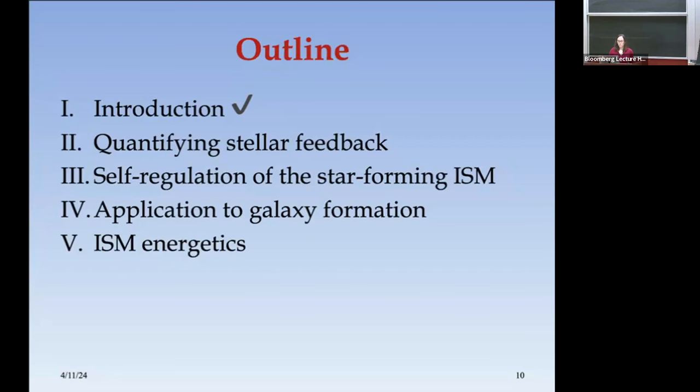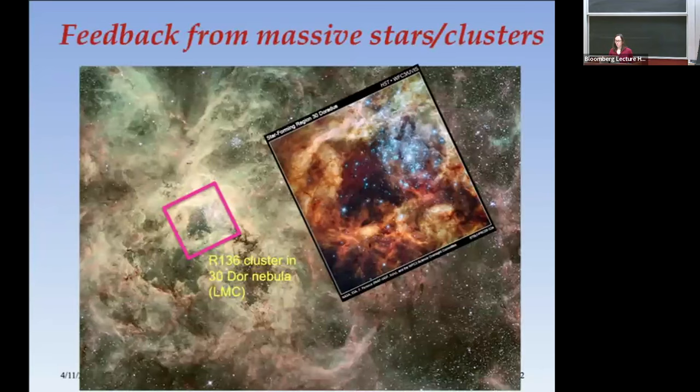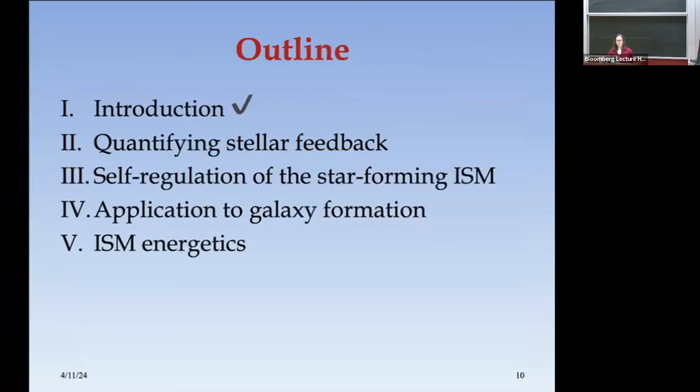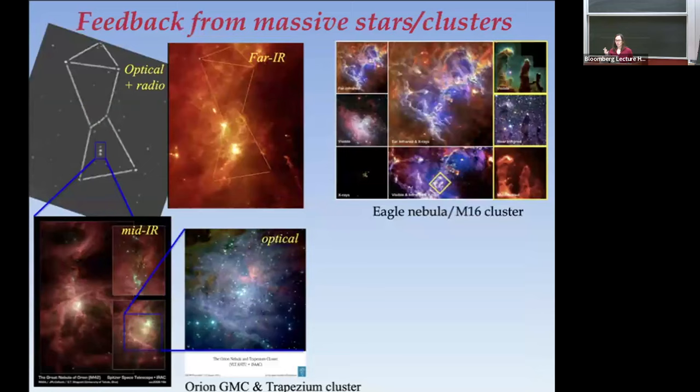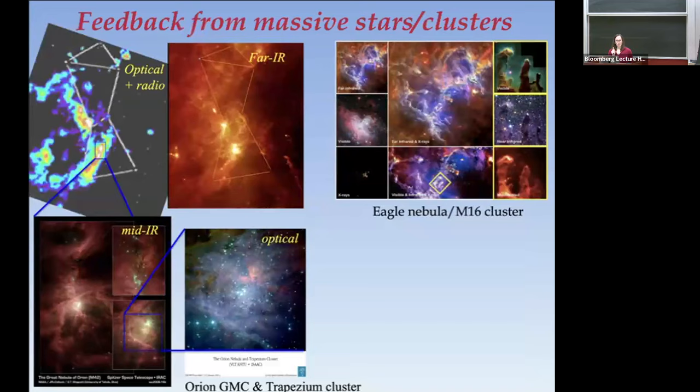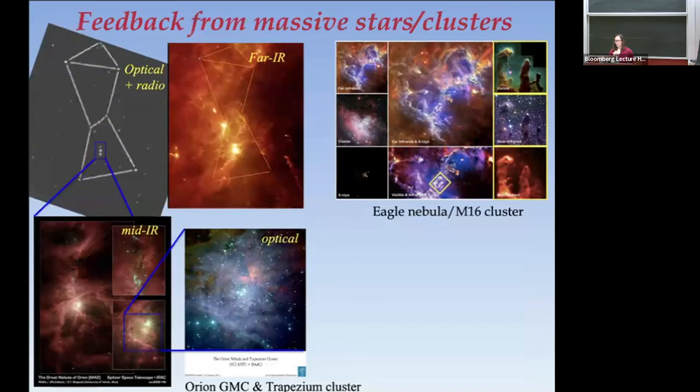Now I'll talk about quantifying feedback. This region shows feedback in action — this is 30 Doradus in the LMC — but much closer to home is Orion, the closest location where massive stars are forming, so it's a good laboratory for studying the effects of feedback.